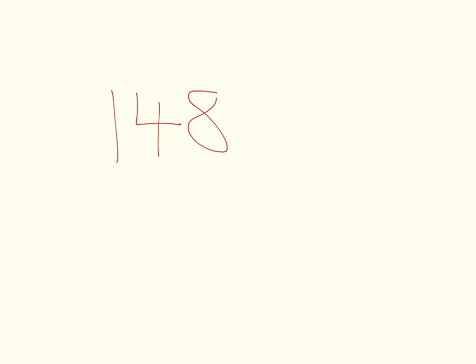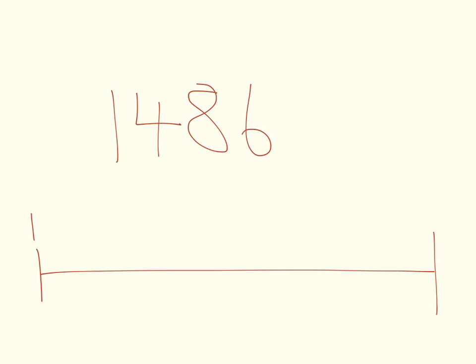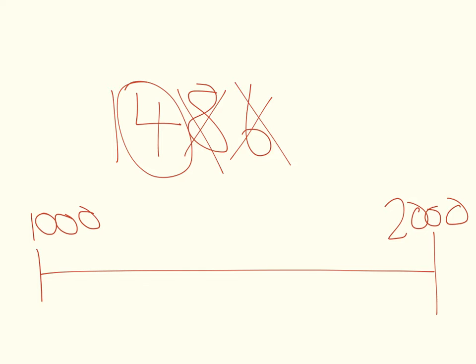So I'm going to give you the number one thousand four hundred and eighty-six. I want to round it to the nearest multiple of one thousand, so I'm going to have one thousand at one end of my number line, and two thousand at the other end. I'm not going to look at the units this time, I'm not going to look at the tens, but I'm actually going to look at the hundreds column. And as before, four is our rounding number. So one thousand four hundred and eighty-six is going to be rounded down to one thousand, because it is the closest multiple of one thousand.